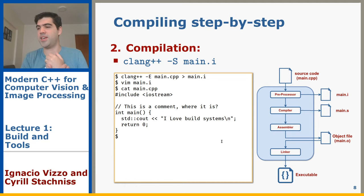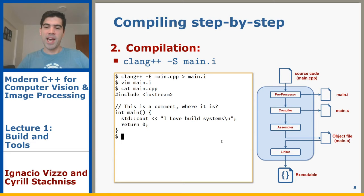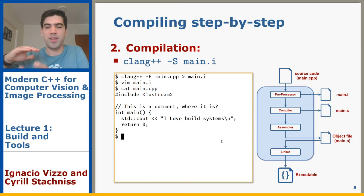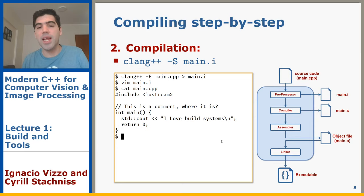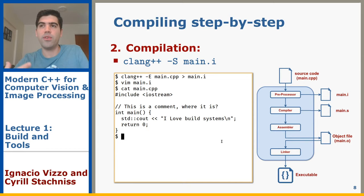Now it's time for the compilation step. This is a term we all use wrong — including myself. When you say 'I will compile this program,' you're actually doing: preprocess, compile, assemble, and link to create an executable. But there's one step called compilation that is the real one. This is where the compiler generates assembly code from your preprocessed source. You invoke clang++ with -S on the source file, and you get a main.s file containing assembly — something easy for a machine to understand.